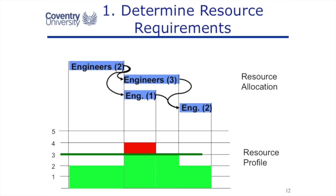Jumping ahead slightly — we've only got three engineers available, so we've got a problem, which I've shown in red for that period of time. We haven't got that fourth engineer. So either we need to get more resources or we need to change the plan. That's what we'll be looking at in the next video clip. We're allocating the resources and creating a resource profile — this is determining what we need for the project.